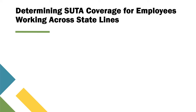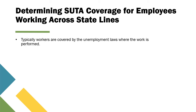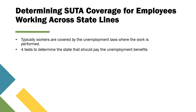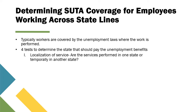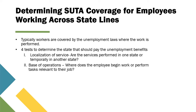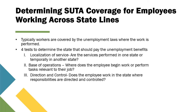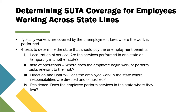When an employee works across state lines, the state that provides FUTA benefits must be determined. Typically, workers are covered by the unemployment laws where the work is performed. However, there are four tests to determine which state should pay: first, localization of service — are services performed in one state or temporarily in another? Second, base of operations — where does the employee begin work? Third, discretion and control — does the employee work in the state where responsibilities are directed and controlled? And last, residence — does the employee perform services in the state where they live?